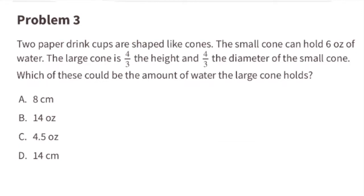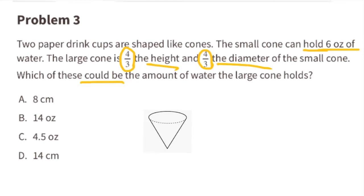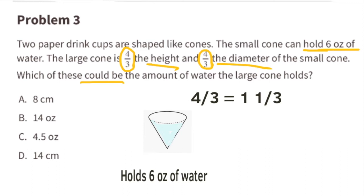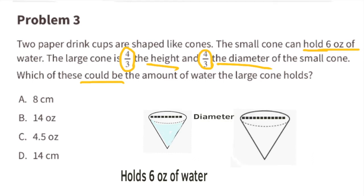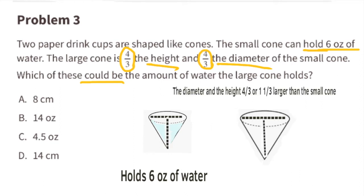Problem number 3. Two paper drink cups are shaped like cones. The small cone can hold 6 ounces of water. The large cone is 4/3 the height and 4/3 the diameter of the small cone. Which of these could be the amount of water the large cone holds? Both the height and the diameter of the large cone are 4/3 — or 1 and 1/3 — that of the smaller cone.